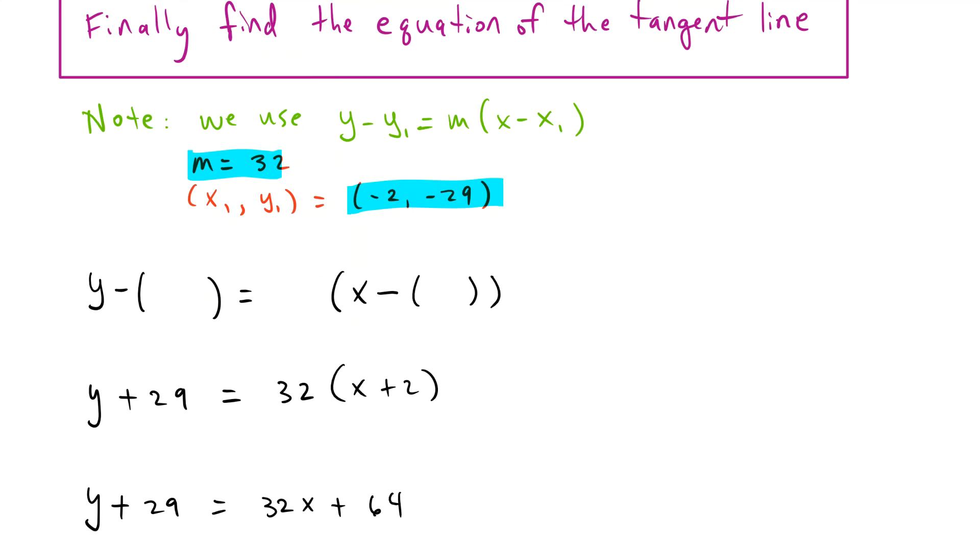The y2 goes here, negative 29. The x2 goes here, negative 2. And the slope goes here. Then we can, this negative here is multiplied through and we get a positive. We have our 32 that gets distributed through. But we should probably first distribute this negative through. That becomes a positive there.